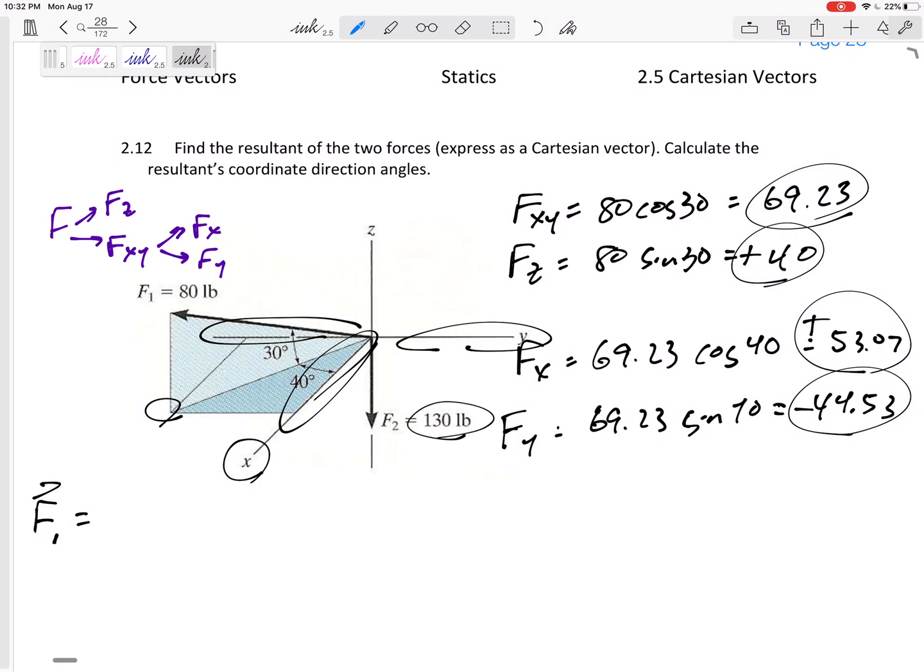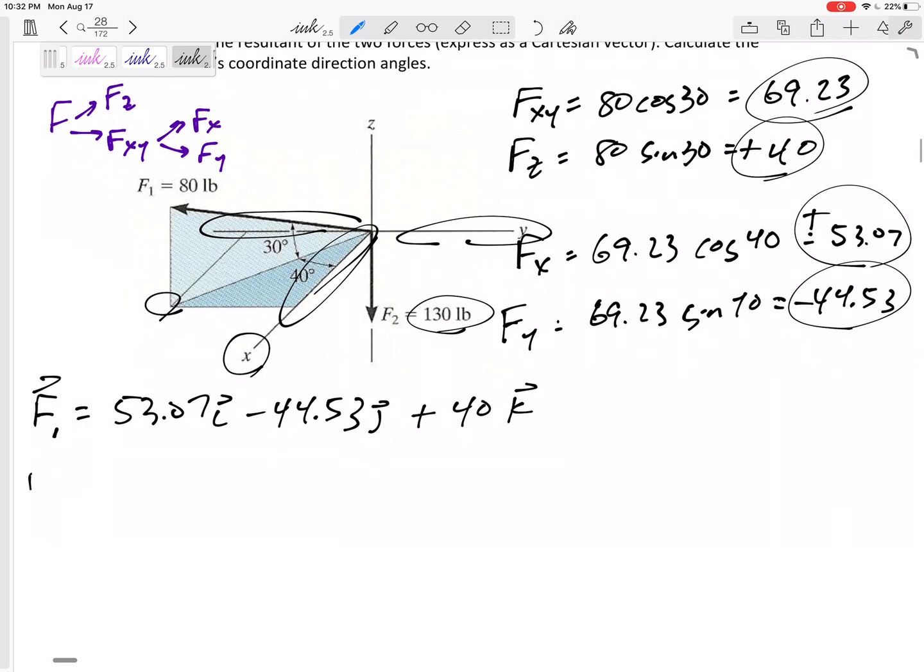So my force one, and just my force one, not my resultant, I'm not adding this quite yet. But my force one, the x component 53.07 in the i, minus 44.53 in the j, and then plus 40 in the k.